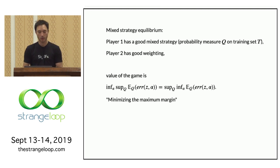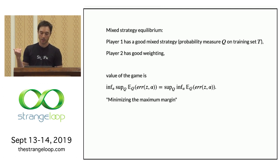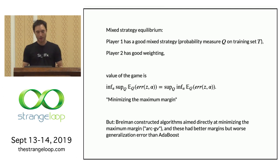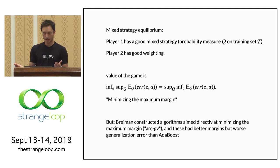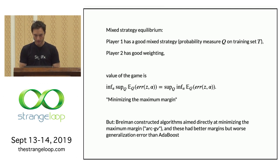The value of the game — the expected gain for player one — is exactly this min-max or max-min margin. This gives another way of thinking about classification: the boosting procedure is trying to play this game and increase this margin. So why not just maximize the margin directly? Breiman did that — and the result does have better margins — but its generalization error, in the examples he considered, was worse than the boosting procedure. It's a kind of fascinating conundrum.